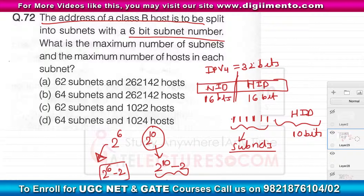This results in 1022 hosts, since 2 to the power 10 is 1024, so 1024 minus 2 equals 1022 configurable hosts in each subnet. Therefore, the final answer is 62 subnets and 1022 hosts.